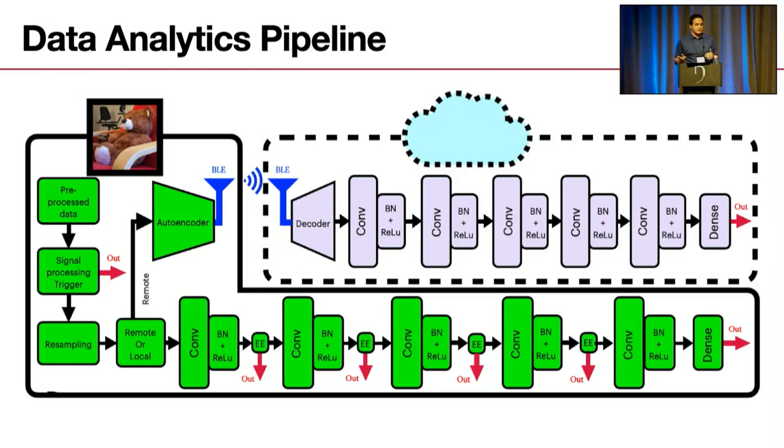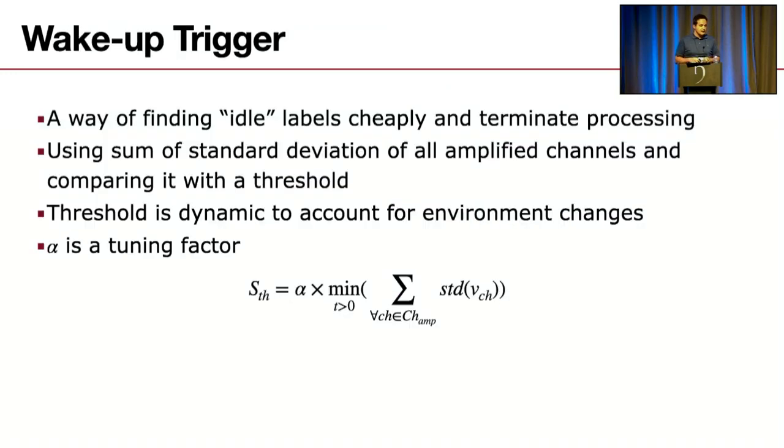Then we have resampling to reduce the sampling rate, then we choose between local and remote. In both cases, we have five layers of neural networks, but the difference is that in local we have early exit blocks implemented to terminate the process faster to save power consumption, and in the remote processing we have autoencoder implemented to compress the data to save power consumption for BLE transmission. Now let's go block by block to explain the power saving algorithms we use in Fabtoy. The first one is wake up trigger.